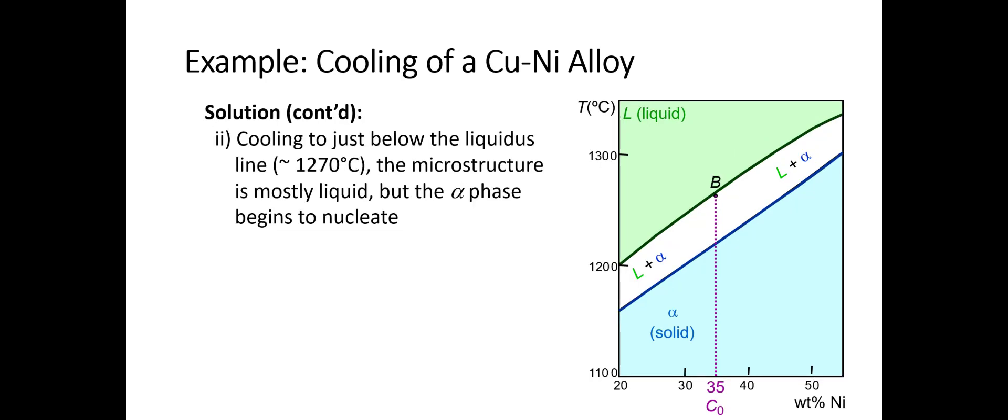Now let's cool it just to below the liquidus line, 1270°C, which is indicated by this point B. Now we have mostly liquid, but just a little bit of alpha is going to start to nucleate. We draw our tie line like we talked about in the previous lecture to find the phase compositions, and we find that the liquid has a phase composition of pretty much 35 percent, but any of the alpha phase that's nucleated has a phase composition of 46 percent.